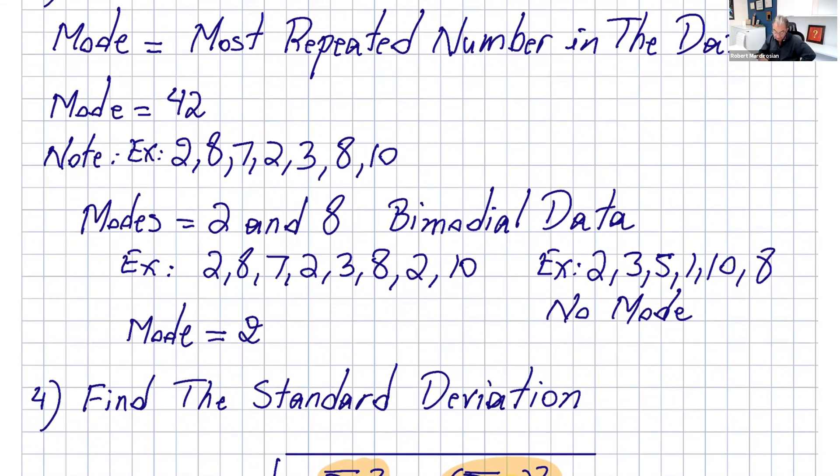I put a couple of notes for the mode here. If you have 2, 8, 7, 2, 3, the modes are 2 and 8 because they're both repeated twice. We say this data is bimodal. If you have 2, 8, 7, 2, 3, 8, 2, 10, the mode is only 2 because 2 is repeated three times. If no number is repeated, then there is no mode.